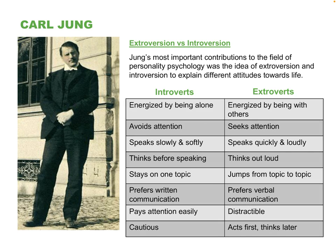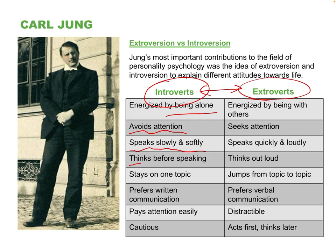Another concept Carl Jung was famous for is the personality dimension ranging from introvert to extrovert. It's a lot more complex than simply being shy versus social. An introvert values being alone — this is someone who is exhausted by being around people and relieved by coming home. They don't need a lot of attention, tend to be soft-spoken, are very thoughtful before they speak, focused on one topic, prefer written communication, and are more cautious.